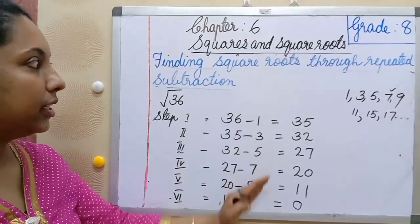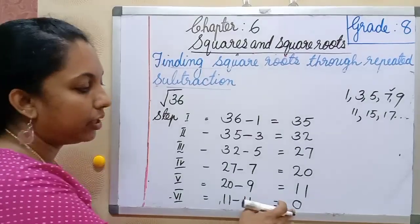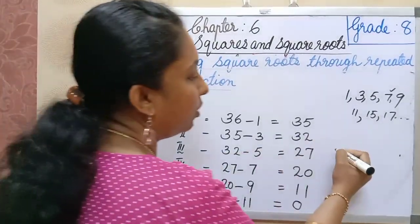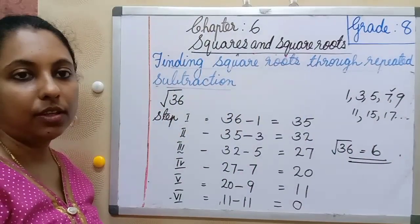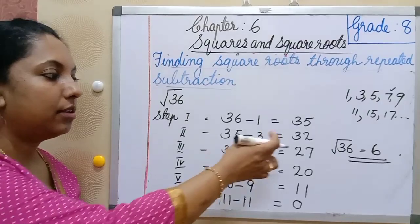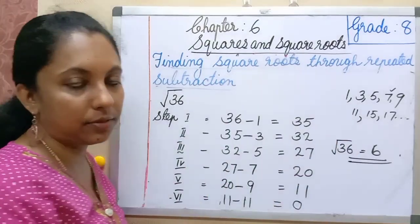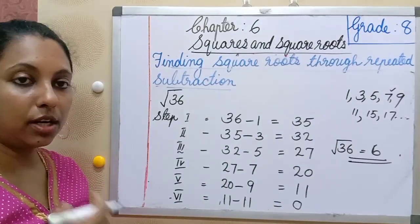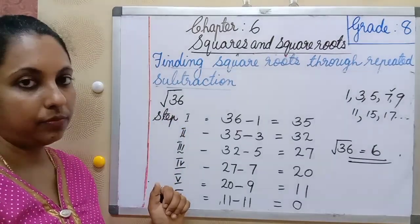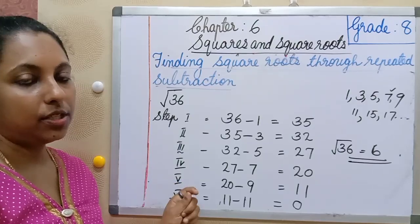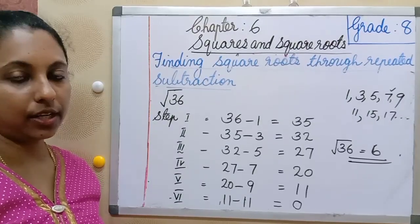This is the method to find the square root through repeated subtraction. We got 0 at step 6, so square root of 36 is 6. However, this method is time-consuming for bigger numbers — that is its limitation. Another method, the factorization method, we will study in the next class.